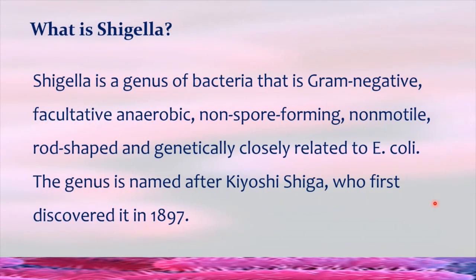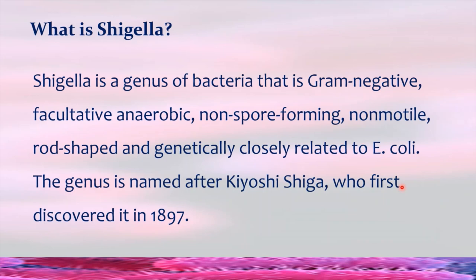So let's tackle the first and important question: What is Shigella? Shigella is a genus of bacteria that is gram-negative, facultative anaerobic, non-spore-forming, non-motile, and rod-shaped — and genetically closely related to E. coli. The genus is named after Kyoshi Shiga, who first discovered the pathogen in 1897. So the term Shigella refers to the genus of bacteria.